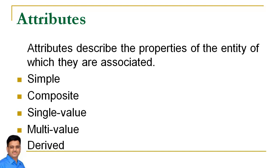Single value — jis attribute ki sirf ek hi value possible hai, like roll number. Multi-value — attribute which can contain more than one value, for example mobile number and email ID. And derived attribute — those attributes whose value can be calculated from other attributes, like age and experience.